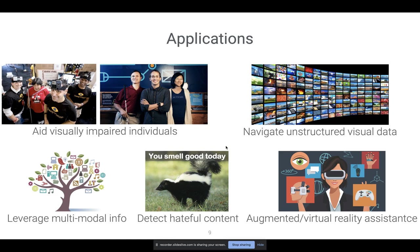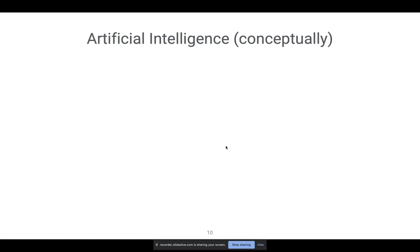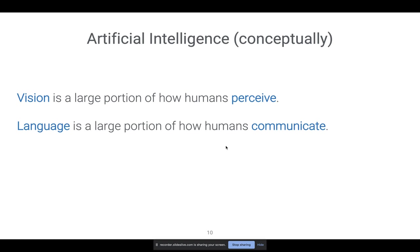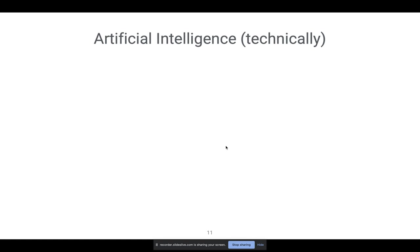For a variety of these applications it's useful to study these problems. More conceptually, even from an AI perspective, vision is a large portion of how humans perceive, and language is a large portion of how humans communicate. It seems central to intelligence to connect this perception to this communication — hence the connection between vision and language. From a technical perspective, this intersection is exciting for a variety of reasons, and I think it can play the role of pushing the boundaries of both vision and language.